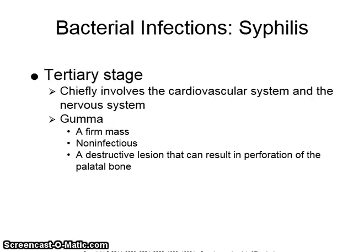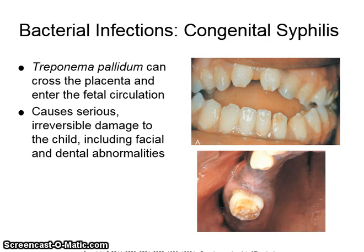The tertiary stage of syphilis chiefly involves the cardiovascular system and the nervous system. The gumma is a firm mass which is non-infectious. It is a destructive lesion that can result in perforation of the palatal bone. Treponema pallidum can cross the placenta and enter the fetal circulation, causing serious, irreversible damage to the child, including facial and dental abnormalities. These are Hutchinson's incisors and mulberry molars, which are typical of congenital syphilis.